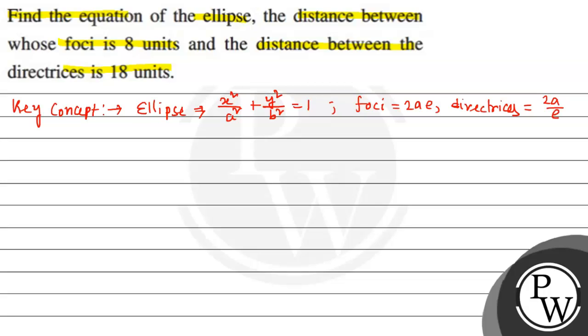And eccentricity, the formula we can write down is b² = a²(1 - e²). In this way we can write it.